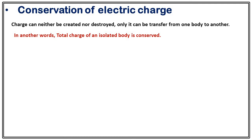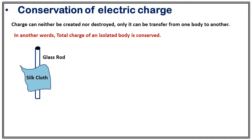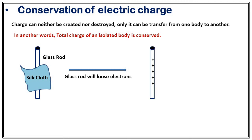Let's understand this with an example. Suppose we have a neutral glass rod, so the number of electrons and protons is exactly the same. We also have a neutral silk cloth. Now, if we rub the silk cloth with the glass rod, the glass will lose electrons. As a result, the glass rod becomes positively charged and the silk cloth becomes negatively charged, because electrons are transferred from the glass rod to the silk.